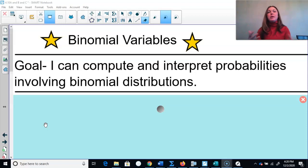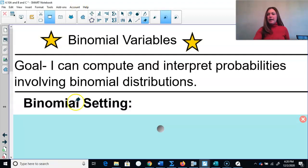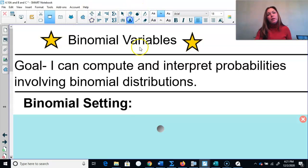In order for something to be a binomial distribution, you have to check and see if it has the binomial setting. So that's one thing you have to know - how to identify it. How do I know what a binomial setting is? In order to check if something has a binomial setting, we can use an acronym, and that acronym is BINS.